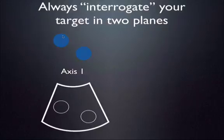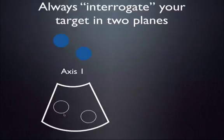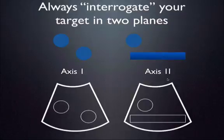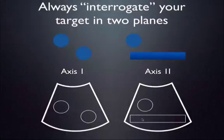For example, two spherical structures visible in short axis may look like two vessels on your ultrasound screen. But when you rotate 90 degrees to a long axis view, you might find that the top structure is actually spherical rather than tubular — meaning it could be a lymph node in the inguinal region rather than a vein you're evaluating for DVT. Always confirm your findings in two planes.